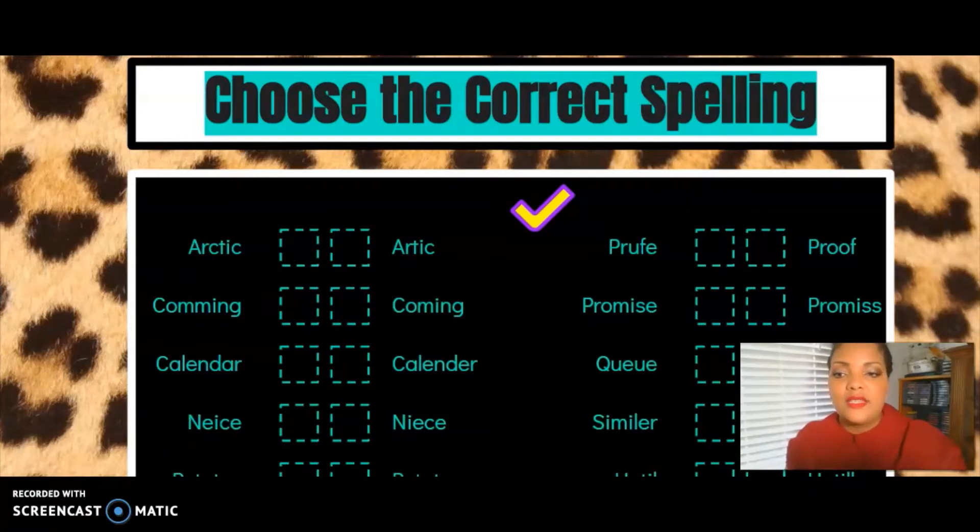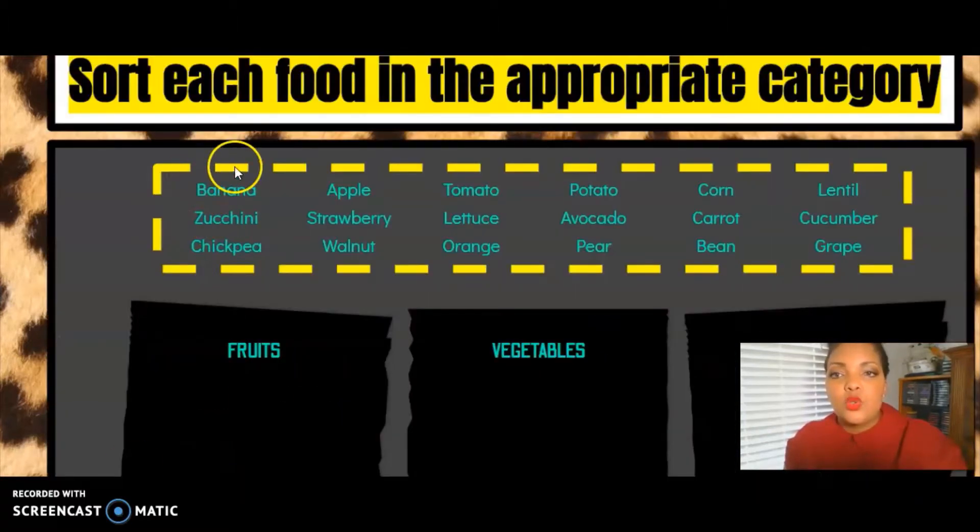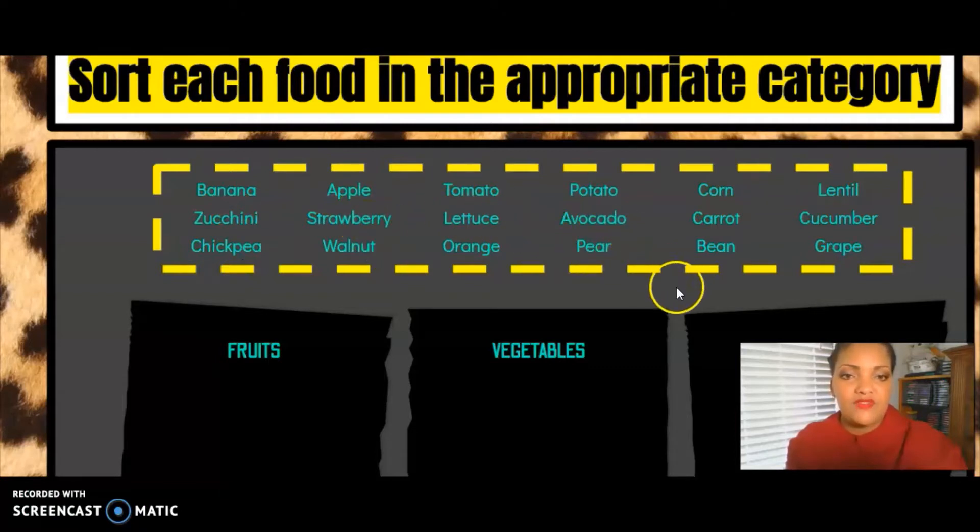And then another example is here, sort each food in the appropriate category. And so if you see, there are several different foods listed here. So the students will have to drag and drop these fruits and vegetables into the category that they belong in.